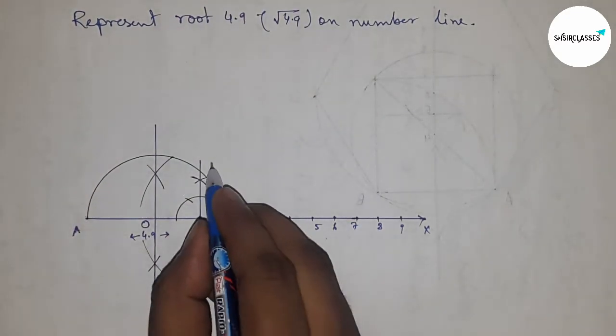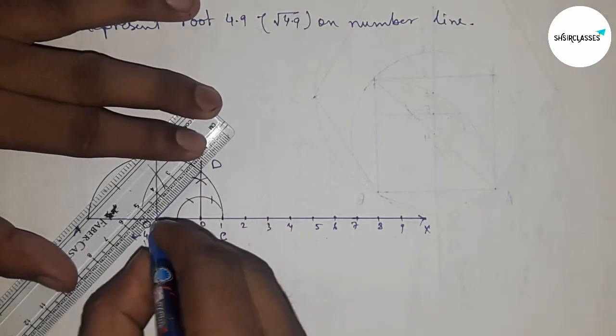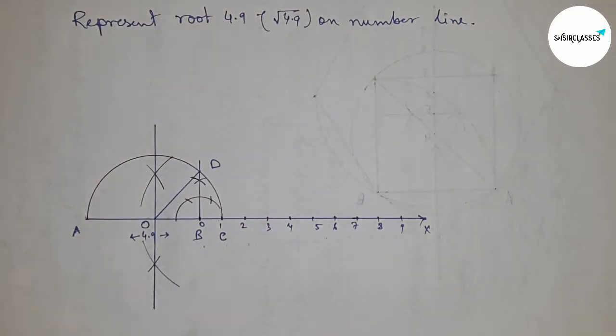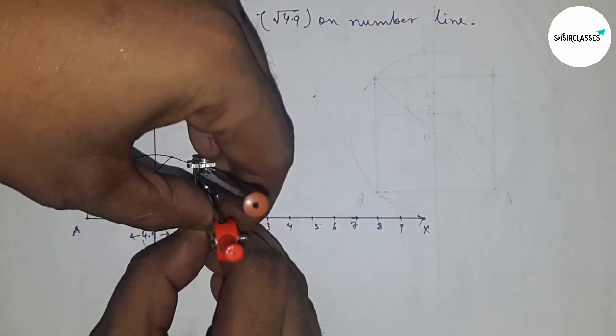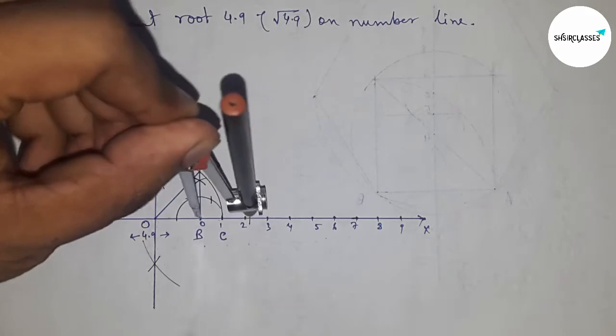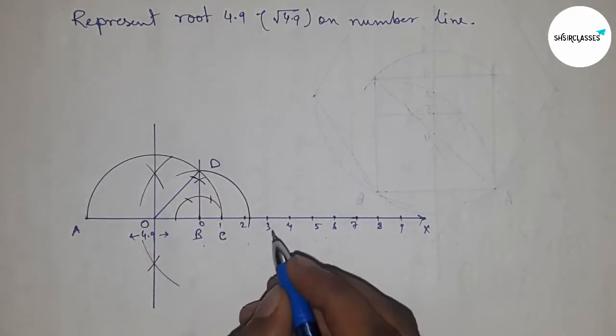Now joining this which meets the semicircle at point D. Next, joining the radius O and D. Now taking the length BD by compass and drawing an arc which meets the number line at point P.